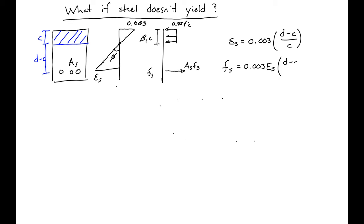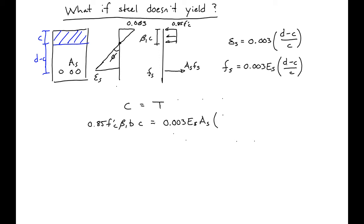We plug this into our compression equals tension expression. Our compression side will be the same as before: 0.85 f'c · β₁ · B · C. This is now equal to our tension, which is the stress in our steel times the area of steel — that is, Es · 0.003 times (D minus C) over C.